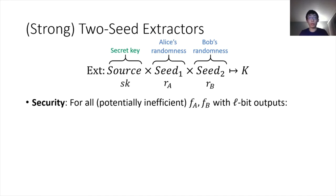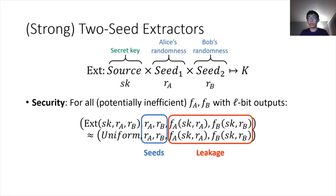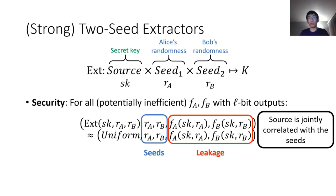For security, what we want is that for all leakage functions, the output of the extractor should be uniform given the seeds that the parties use and the leakage that the eavesdropper gets. What this means is that the source is jointly correlated with the seeds, but with each of the seeds independently, we would like to use the seeds to extract some fresh randomness out of the source.